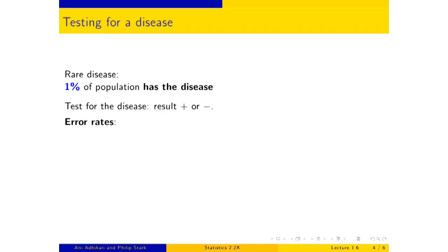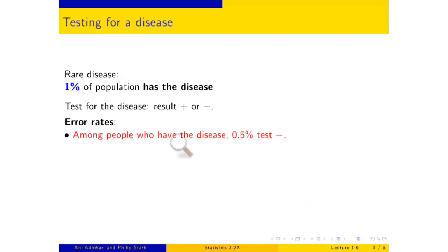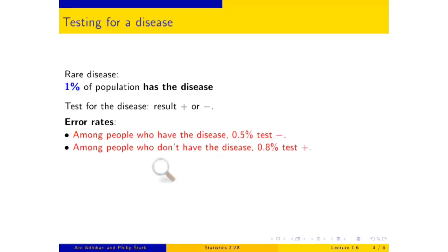There are two kinds of errors. The person has the disease but the test says no — that's a false negative. Among people who have the disease, half of 1% test negative, so 0.005. And among people who don't have the disease, 0.8 of 1% test positive — they get a positive result but don't actually have the disease. That is called a false positive.